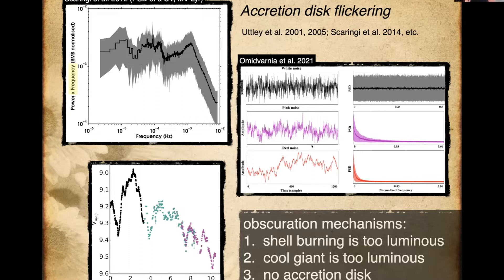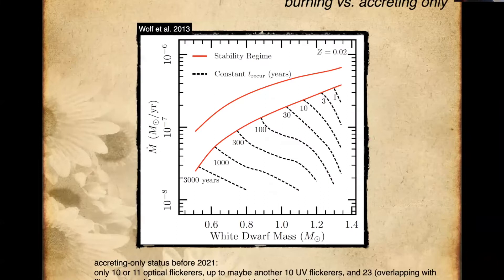But things can prevent you from seeing flickering — in particular, the cool giant being really luminous and dominating the flux, because the cool giant is not flickering. There can be no accretion disk at all if you have spherical accretion from the red giant wind. And especially, shell burning can overwhelm the flickering. So in the parameter space of accretion rate, white dwarf mass, and time since last nova eruption, there's a fairly narrow range where burning happens.